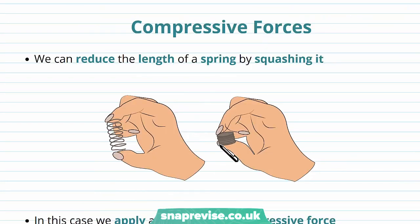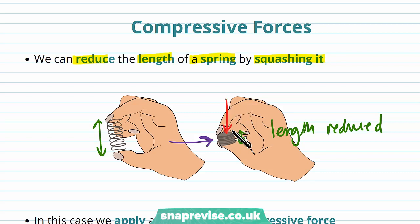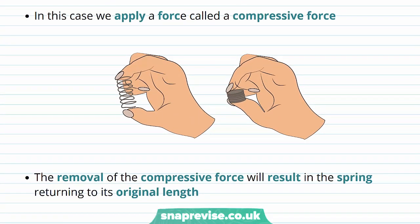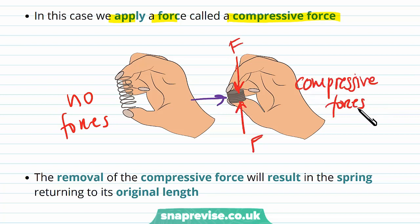Compressive forces are essentially the opposite of tensile forces — we can reduce the length of a spring by squashing it. A compressive force is applied on either end of the spring to squash it, reducing its length below the natural length. Where the spring is at its natural length, no forces act on it; the compressive forces are what reduce its length.